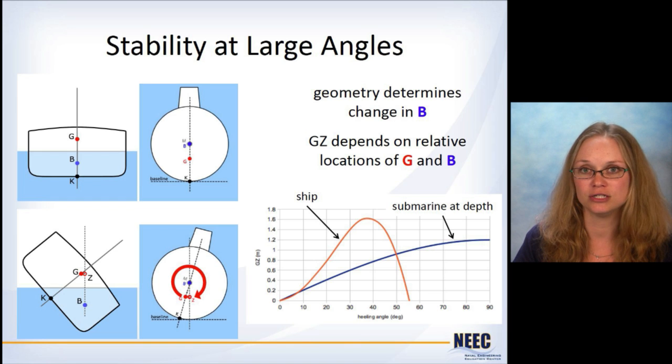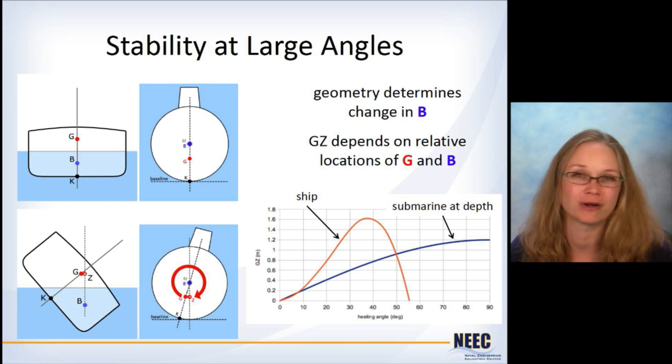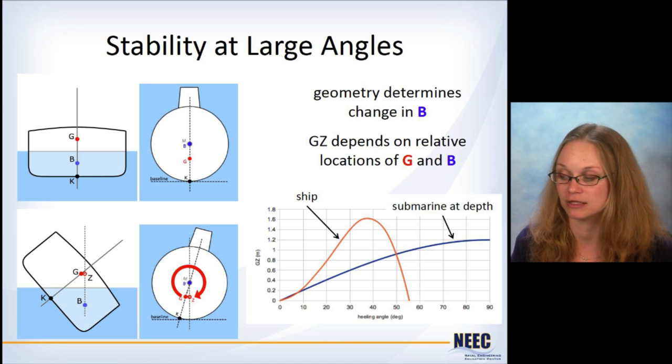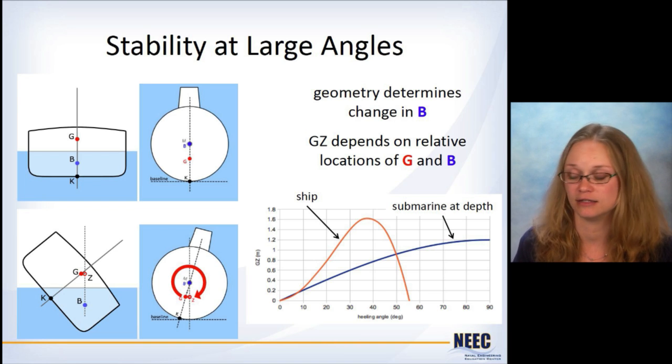For a ship, you've got the GZ where it starts out low and there's some maximum GZ, 45 degrees, 40 degrees, something like that. And then it goes rapidly as water comes over the deck and then eventually the ship will capsize. But for a submarine, because G is just track, it really looks like a sine curve. And so the maximum GZ for a submarine when it's at depth is actually at 90 degrees. So it's very different than a surface ship.